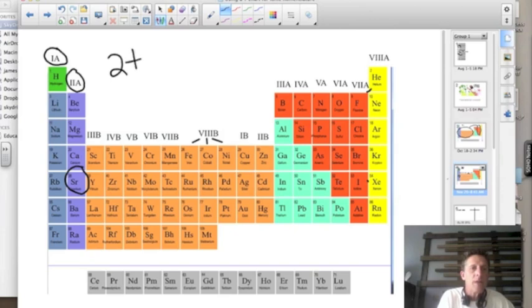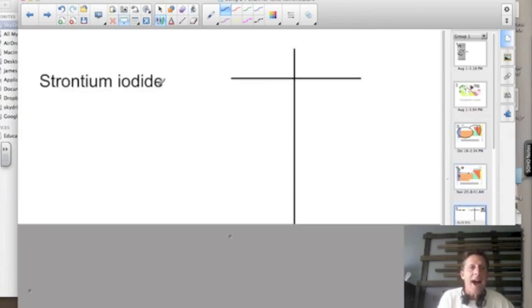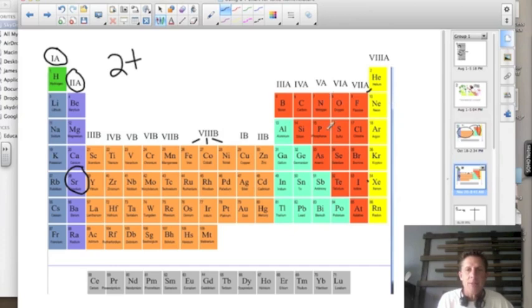We combine this with iodide. Iodide is found on the non-metal side of the periodic table. Iodine is right here. Iodine is in the column roman numeral seven—that's five, six, seven. So roman numeral seven.